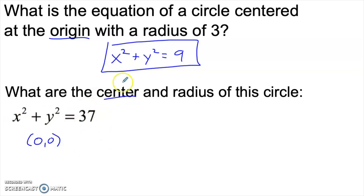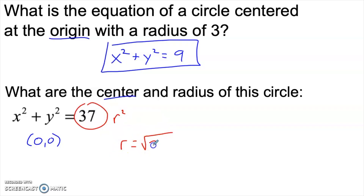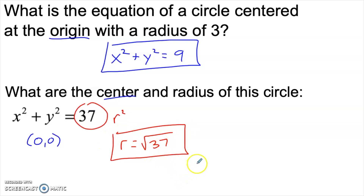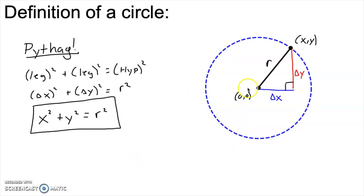And what is the radius? Well, 37 equals r squared, so the radius is the square root of 37. Notice I'm only taking the positive square root, not the negative, because in geometry distances are always positive. Circles are really easy — but there's more to the story, because so far our circles have to be centered at the origin.